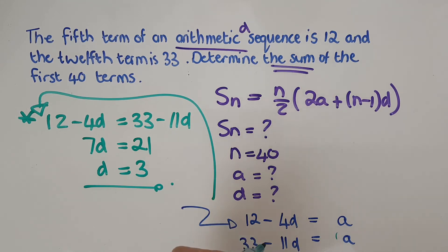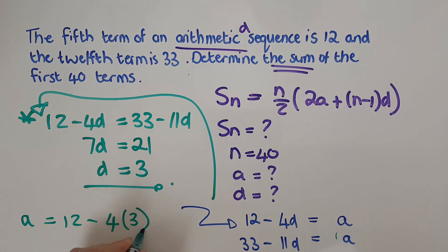Once I've got d, I'm going to sub back in here and get out my a value. If a equals 12 minus 4d, the d is 3, so a is actually 0. So a equals 0.